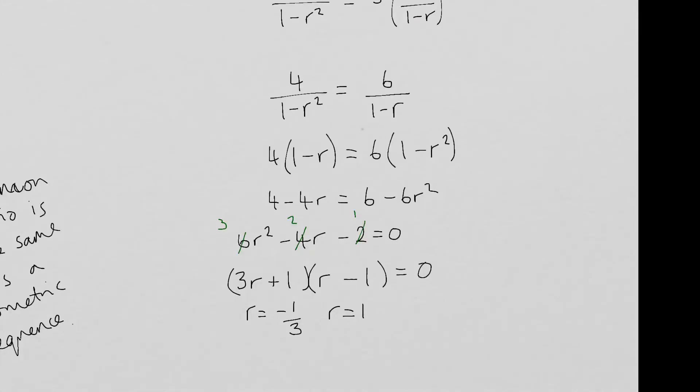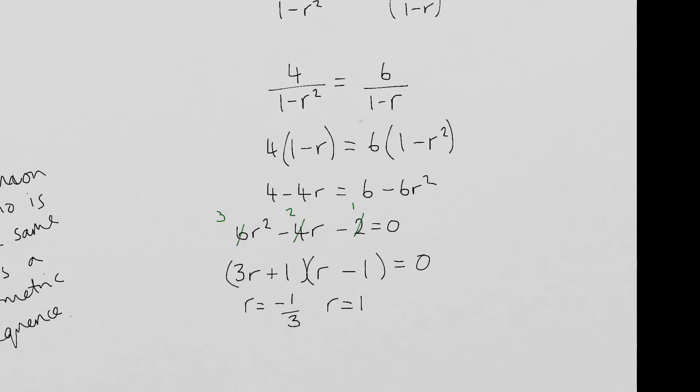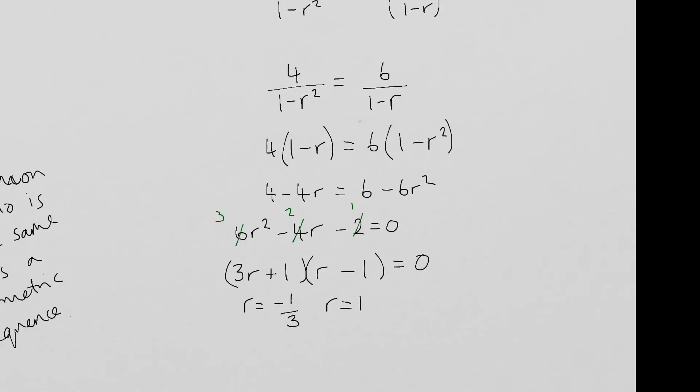OK, so hopefully you are at a similar point. So you've taken the denominators and multiplied across, expanded your brackets, got to a quadratic. At that point you might have used your solver on your calculator and that's fine. So then you get down to this point where you've got two solutions. So R can either be minus a third or R can be equivalent to one. And we just need to choose one of those, it can't be both.